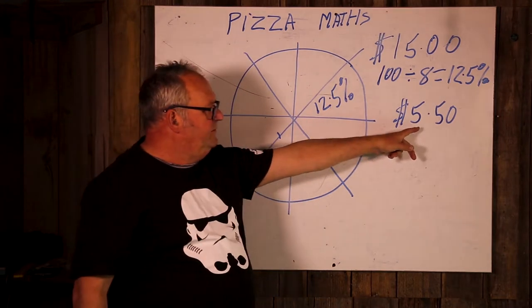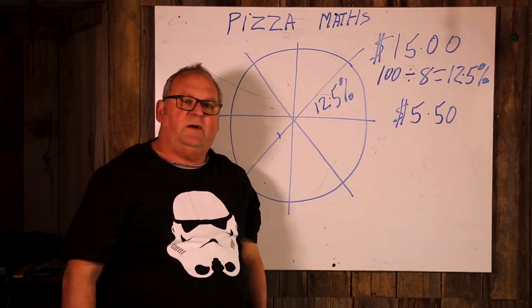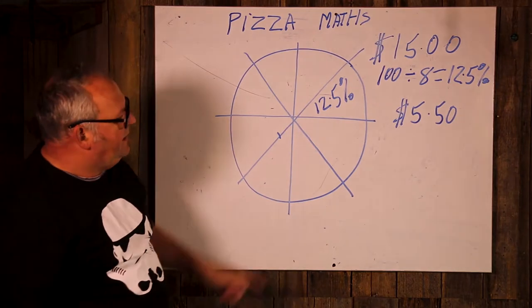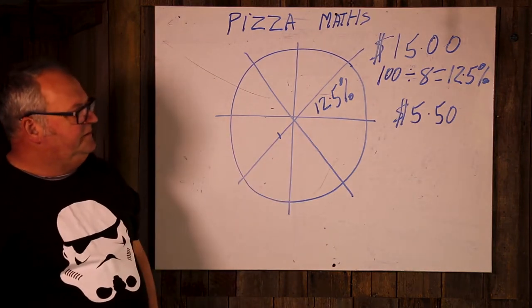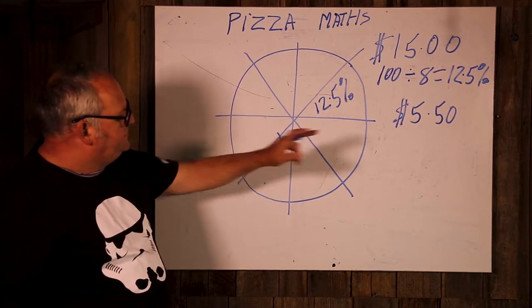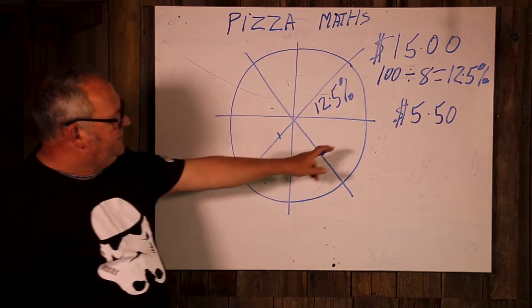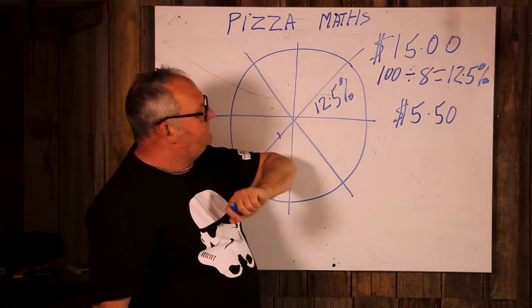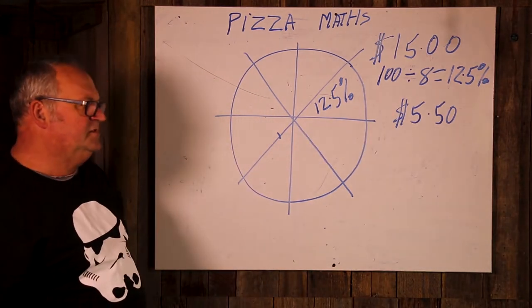Then I've got my little friend. He turns up and pays $5.50 for his share of the pizza. So we need to work out how many pieces of the pizza he can eat when he's putting in $5.50.